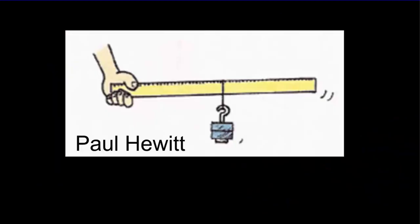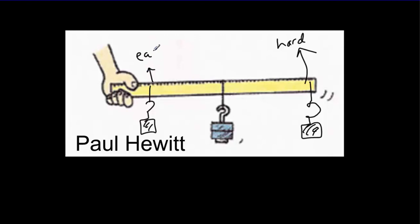If you weren't convinced by the door handle example, perhaps this example from Paul Hewitt is a little bit clearer. Suppose we want to rotate this ruler upwards with our hand. If we place the weight far from the hand, it's going to be hard to rotate. But if we place the mass close to the hand, it's going to be easier to rotate. So it doesn't depend just on how much mass we have — it also depends on where we place that mass, and how far it is from the axis of rotation.